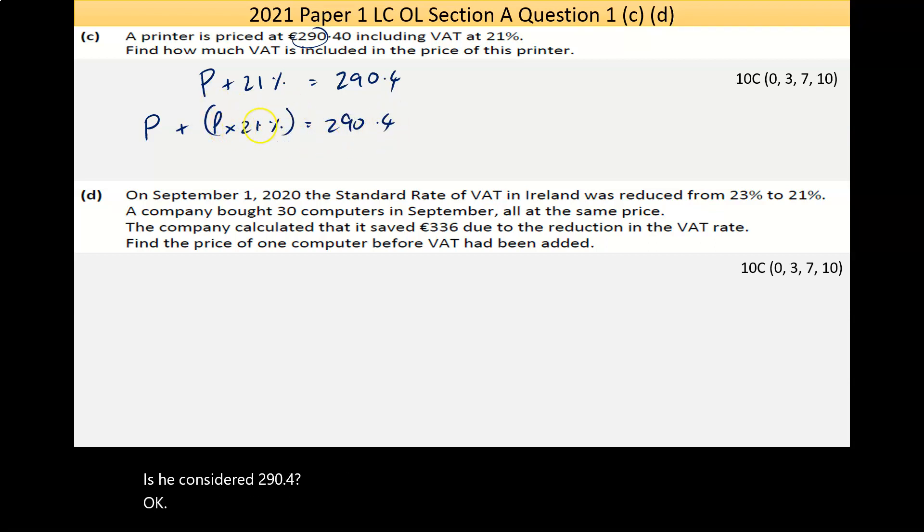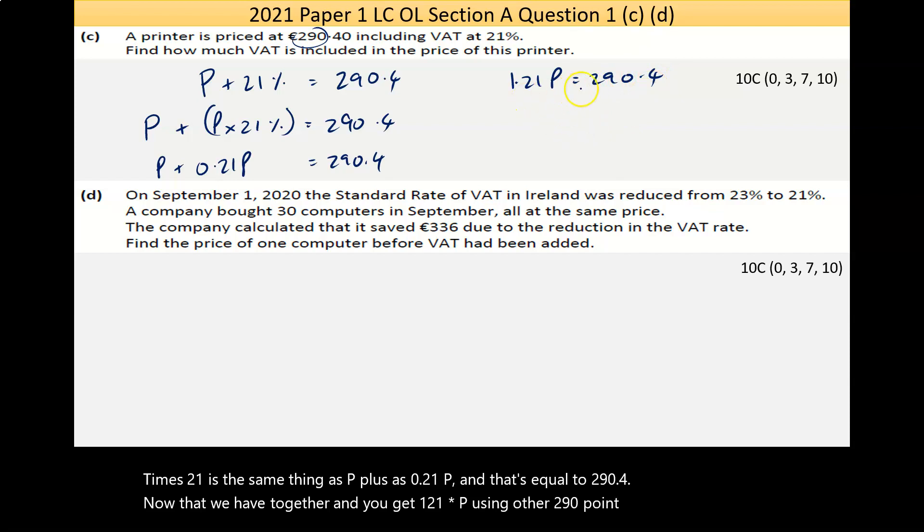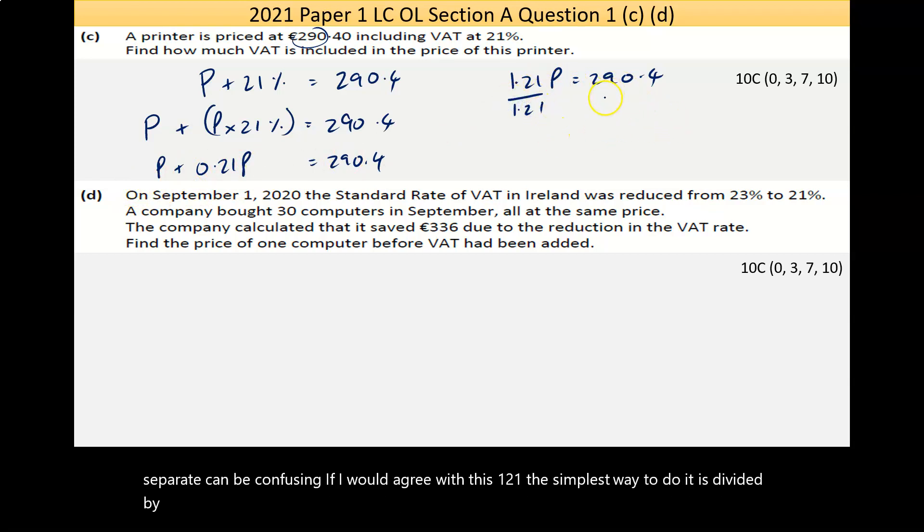This is tricky, but we've got one unknown here - it's the same letter occurring twice. If I do the maths of that, I can go P plus P times 21% is the same thing as P plus 0.21P, and that's equal to 290.4. That can be added together and you get 1.21 times P equals 290.4. Again, this is an equation of one unknown. The simplest way to deal with this 1.21 is to divide by itself. Do it to one side, do it to both. If you divide something by itself it cancels, and P equals that number there - I'm getting €240.